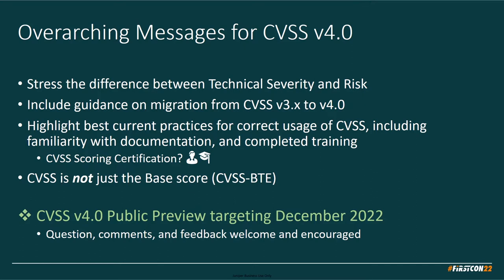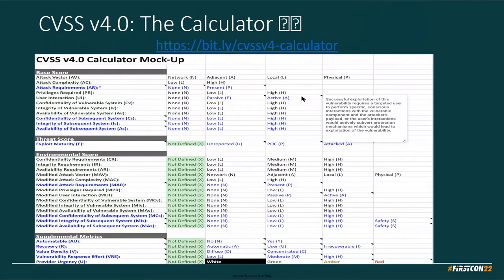Everybody loves grabbing CVSS base scores, putting them in an Excel spreadsheet, sorting by technical severity, and patching the top first — but that's not how it's supposed to work. There's something called BTE — base, threat, and environmental — that we now have. We're targeting the public preview for December 2022. There's also a bit.ly CVSS v4-calculator URL where you can see our thinking and hover over things. It doesn't create the score yet since we're working with NIST on the math, but it's one way to start seeing what we're looking at and give us feedback.